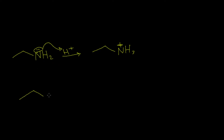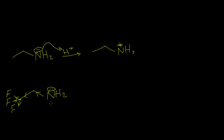When we take a look at another example — the same ethylamine but substituting the terminal hydrogens with fluorine atoms or electron-withdrawing groups — these three fluorine atoms will attract or withdraw the electrons through the sigma bonds. So it's going to decrease the electron density on this nitrogen atom, which will decrease the basicity of this compound overall.